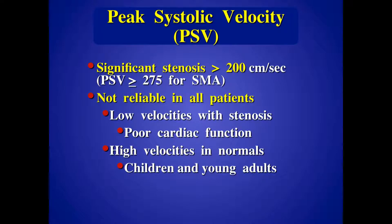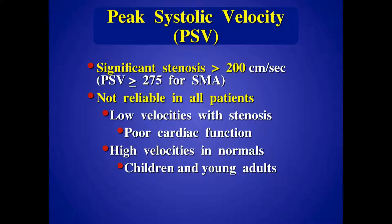In general, for the celiac, for the IMA, and for the renal, we use a velocity cutoff of 200 centimeters per second. The only exception is the SMA, where 275 works better. Bear in mind, velocity cutoffs don't work for all patients — particularly very old or very young patients. Younger patients typically have normally high velocities that may be surpassing the threshold.